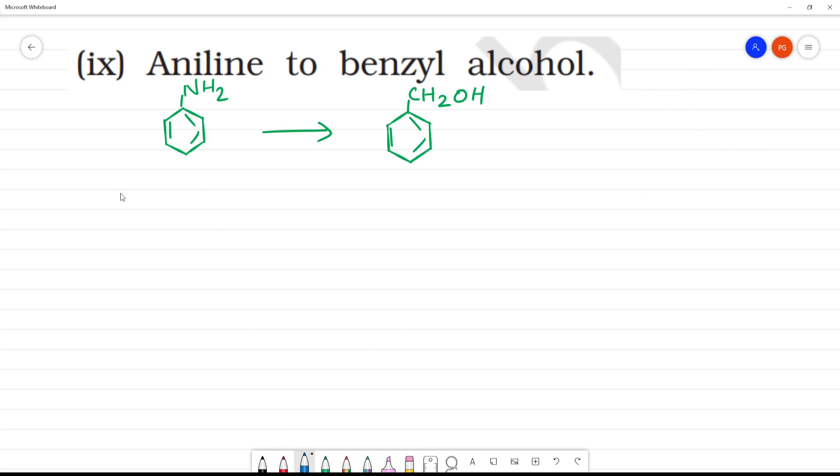So what is the first step? First, aniline NH2. The first step is diazotization reaction: NaNO2/HCl at 273 to 278 Kelvin. We get benzene diazonium chloride.